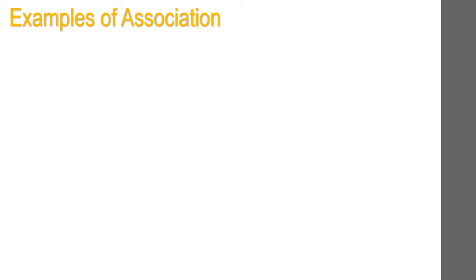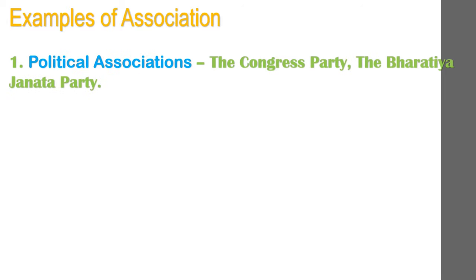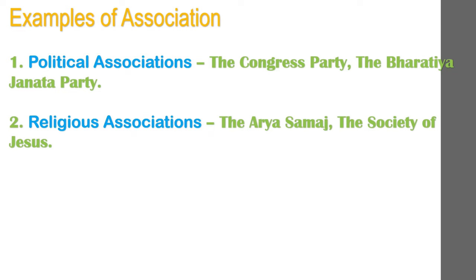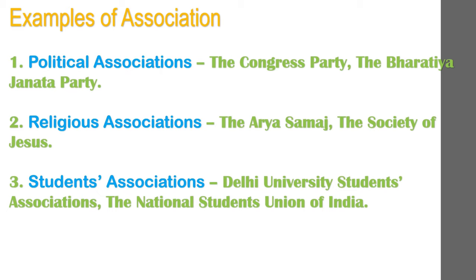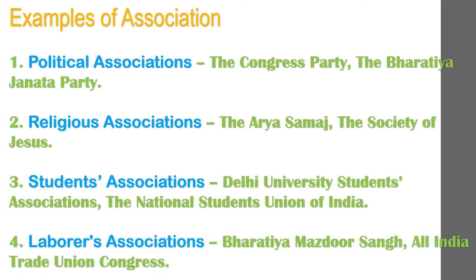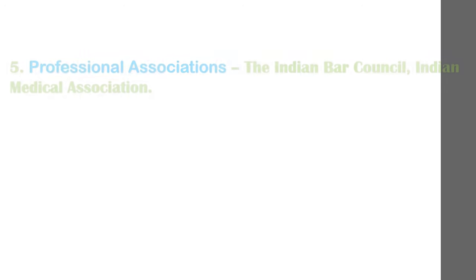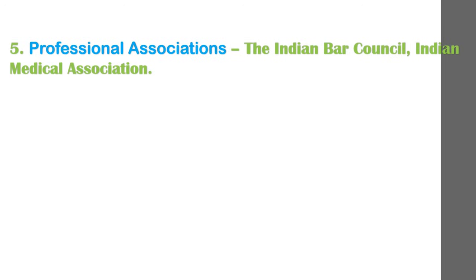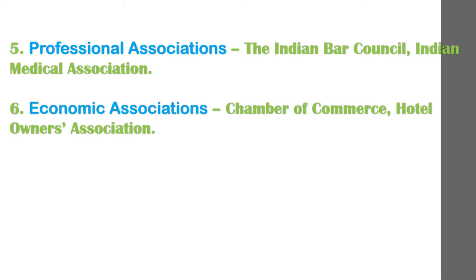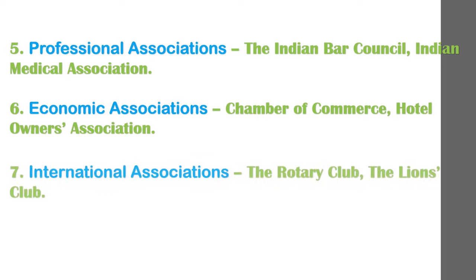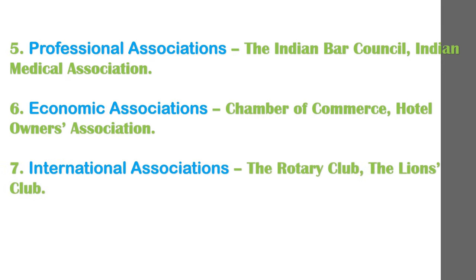Examples of association: Number one, political associations — the Congress Party and the Bharatiya Janata Party. Number two, religious associations — the Arya Samaj and the Society of Jesus. Number three, students associations — Delhi University Students Association and the National Students Union of India. Number four, laborers associations — Bharatiya Mazdoor Sangh and All India Trade Union Congress. Number five, professional associations — the Indian Bar Council and Indian Medical Association. Number six, economic associations — Chamber of Commerce and Hotels Owners Association. Number seven, international associations — Rotary Club and the Lions Club.